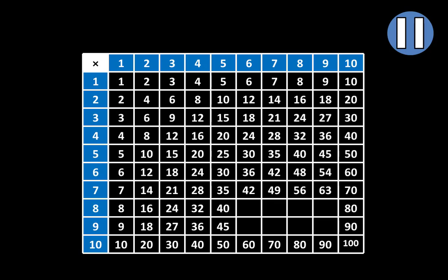Let's move to the next row. The second missing product is 56. The next missing product is 64. And the last missing product in that row is 72.